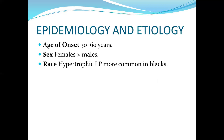Now for more details on epidemiology and etiology: the age of onset is 30 to 60 years — this does not mean a 29-year-old cannot get it, but that is the common age group. Females are more affected compared to males. Regarding race, hypertrophic lichen planus is more common in black individuals.